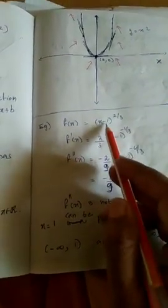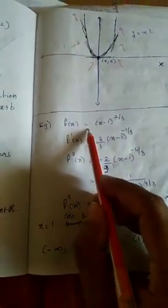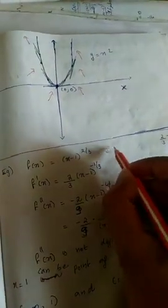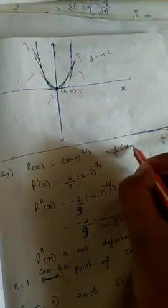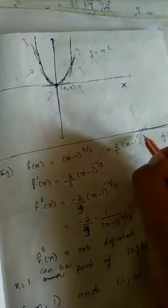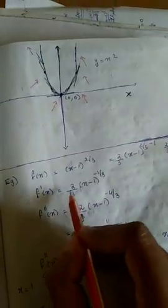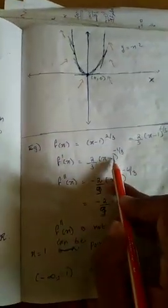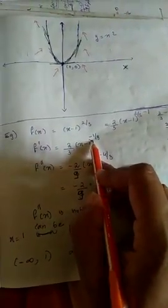The derivative exists at the points of inflection. This function is f of x equal to x minus 1, the whole raised to 2 by 3. The derivative is 2 by 3 times x minus 1, the whole raised to 2 by 3 minus 1, which is 2 by 3 times x minus 1, the whole raised to minus 1 by 3.